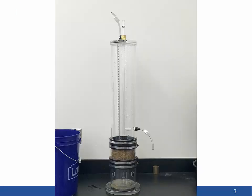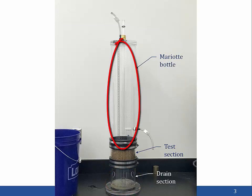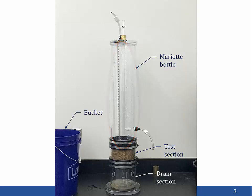This photo shows the permeameter we will be using in your lab. The test section containing the soil specimen is located near the bottom of the device. Below the test section is the drain section, which is used to hydraulically connect the bottom of the sample to the lower reservoir. Above the test section is a Mariette bottle, which controls the elevation of the reservoir above the specimen and allows us to compute the flow rate Q. The entire device will be placed into a bucket, which keeps the sample saturated and controls the elevation of the lower reservoir.